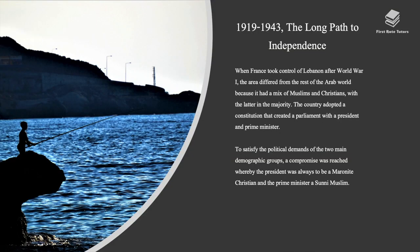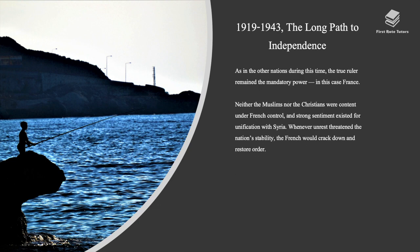First, let's take a look at the long path to independence. Between 1919 and 1943, France took control of Lebanon after the First World War. The area differed from the rest of the Arab world because it had a mix of Muslims and Christians, with the latter in the majority. The country adopted a constitution that created a parliament with a president and prime minister. A compromise was reached whereby the president was always to be Maronite Christian and the prime minister a Sunni Muslim. As in other nations during this time, the true ruler remained the mandatory power — in this case, France. Neither the Muslims nor the Christians were content under French control, and strong sentiment existed for unification with Syria. Whenever unrest threatened the nation's stability, the French would crack down and restore order.